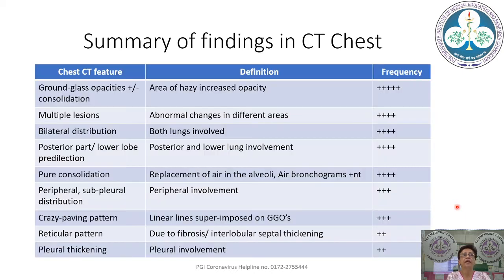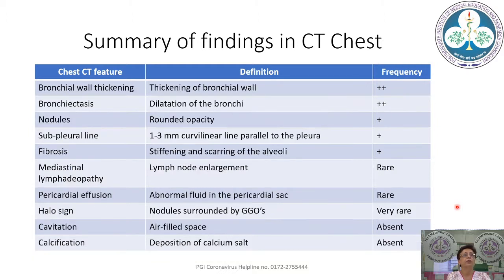Summarizing CT findings in order of frequency: GGOs with or without consolidation is most common, followed by multiple lesions in both lungs, predilection for posterior and lower lung involvement, and multifocal consolidation. Less common findings are crazy paving pattern, reticular pattern due to interlobular septal thickening, pleural thickening, bronchial wall thickening, and bronchiectasis. Very uncommon findings are nodules, subpleural lines, and fibrosis. Rare findings are mediastinal lymphadenopathy, pericardial effusion, and halo sign. Cavitation and calcification are findings that are simply not seen in COVID-19 pneumonia alone.